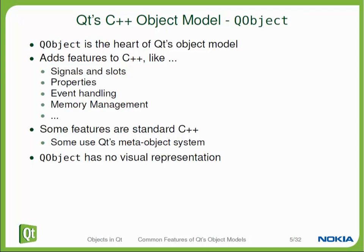Many of the features that QObject adds to your class are regular C++ and are just inherited. Some of the features, though, are created by Qt's meta object system, and that uses an external code generator tool. This will be covered later in the signals and slots video.